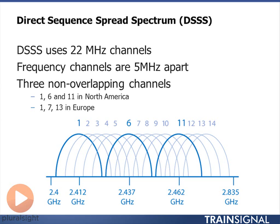In the 2.4 gigahertz band, here in the US, there is about 79 megahertz of spectrum. That allows deployment of three non-overlapping channels — channel 1, channel 6, and channel 11. This is because the spectrum band is defined with a channel every 5 megahertz.